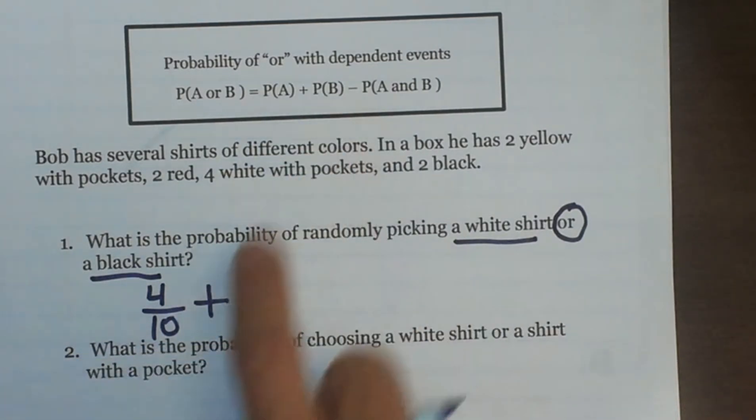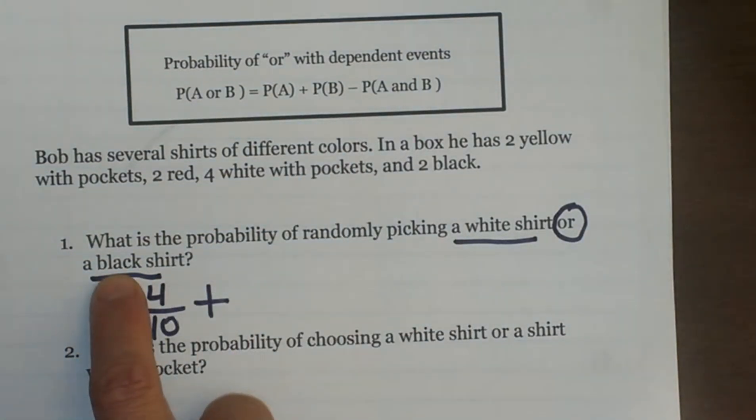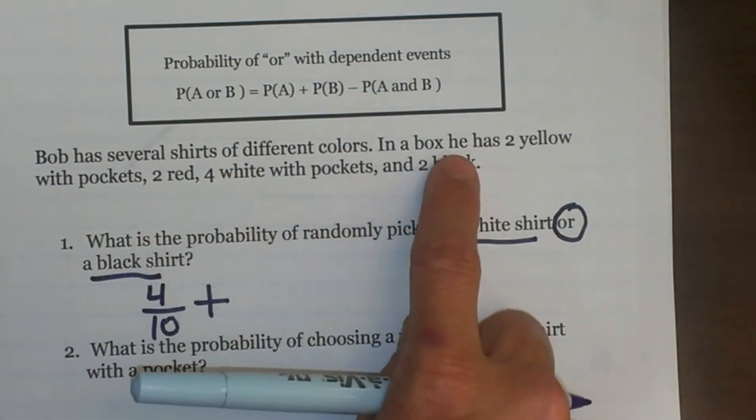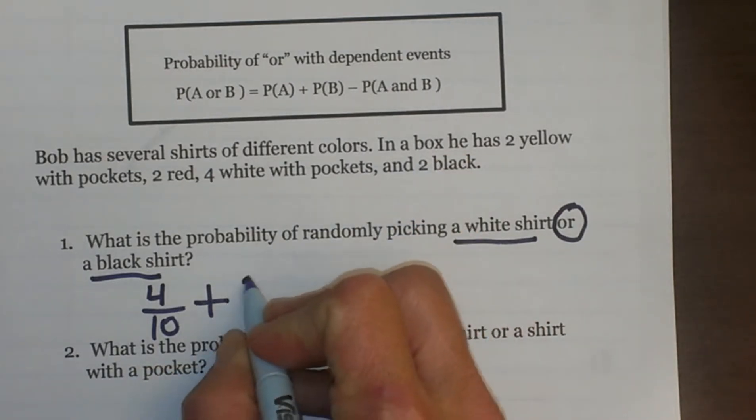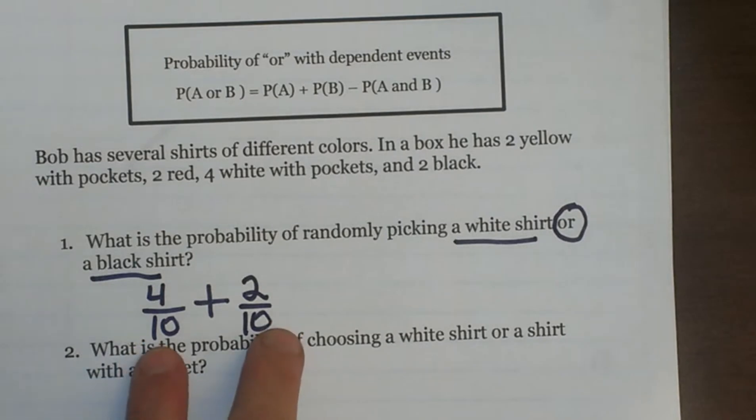And what is the probability of the second event happening or choosing a black shirt? Well I have two black shirts out of ten, so I am just going to add those probabilities together. Now I have to think, is there any overlap between white shirts and black shirts? And there aren't, they are two separate types of shirts, there is no overlap.